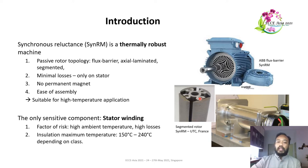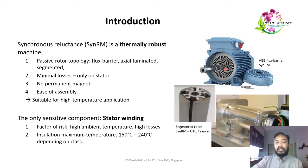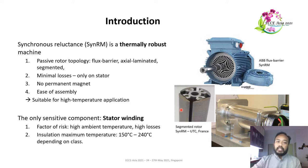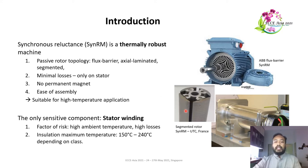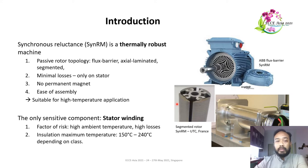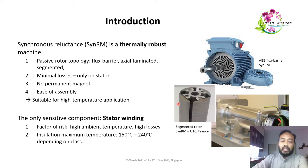Why a segmented rotor instead of another topology? It is mainly due to manufacturing constraints that make it very difficult to punch the metal sheet with flux barrier forms. Therefore, we end up with a segmented rotor, which is much easier to fabricate at small dimensions. Our machine has an active length and diameter of 45 millimeters — a very small machine of around 250 watts — making punching holes practically impossible.